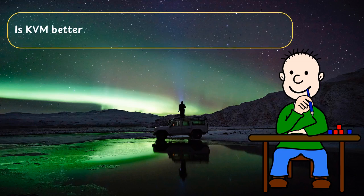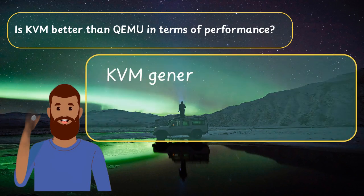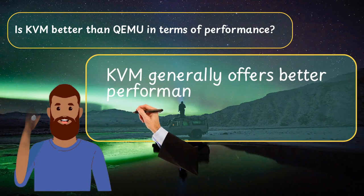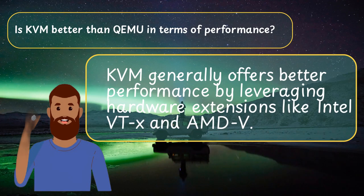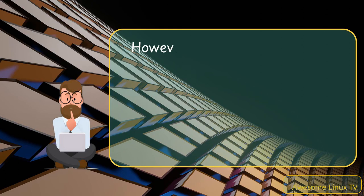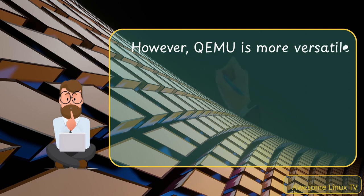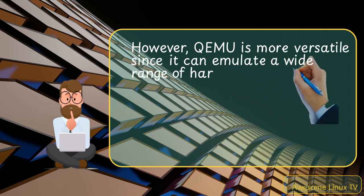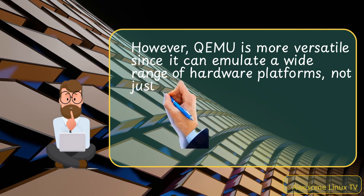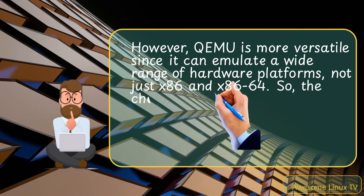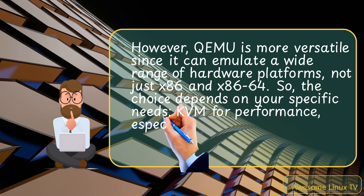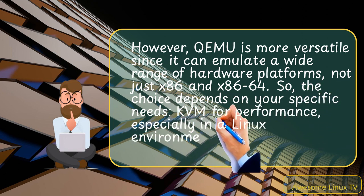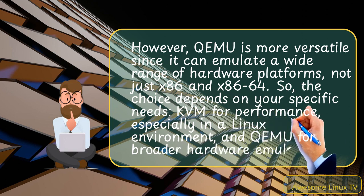Is KVM better than QEMU in terms of performance? KVM generally offers better performance by leveraging hardware extensions like Intel VT-x and AMD-V. However, QEMU is more versatile since it can emulate a wide range of hardware platforms, not just x86 and x86-64. So the choice depends on your specific needs — KVM for performance, especially in a Linux environment, and QEMU for broader hardware emulation.